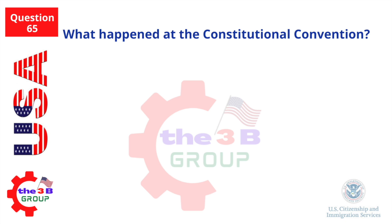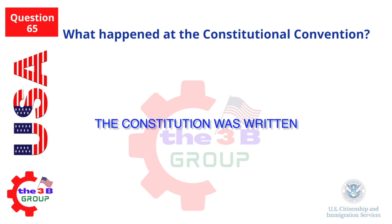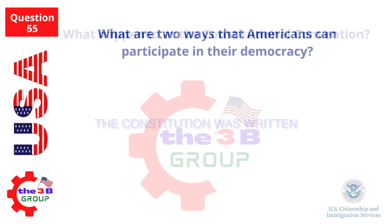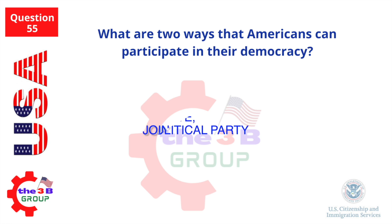What happened at the Constitutional Convention? The Constitution was written. What are two ways that Americans can participate in their democracy? Vote. Join a political party.